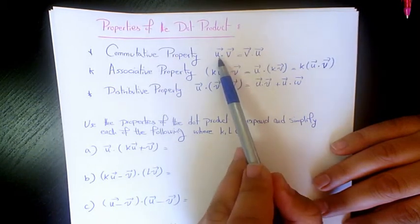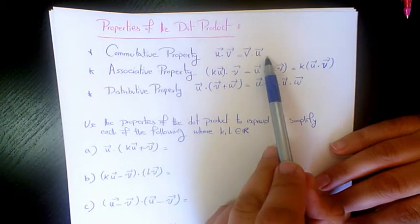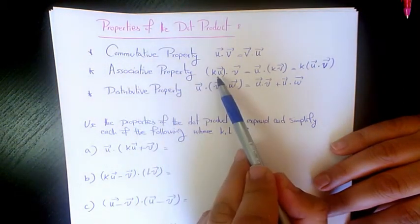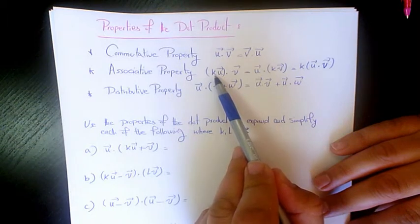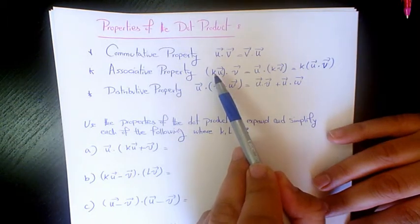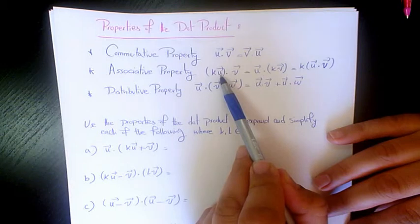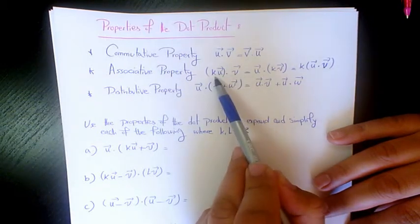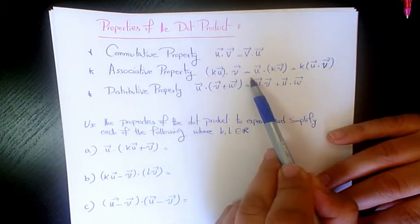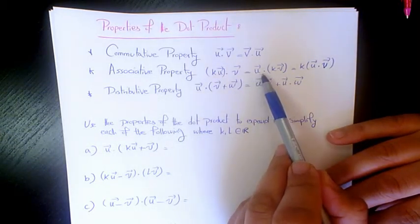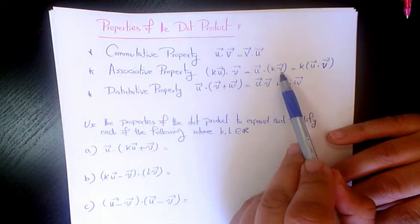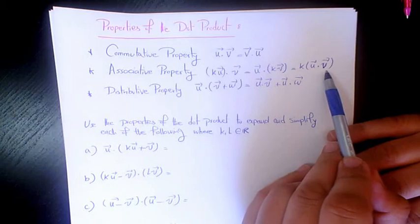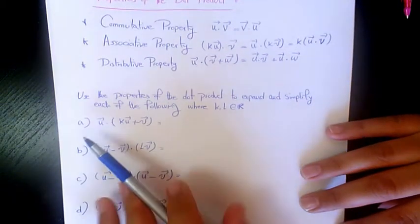So whenever you have u dot v, that would be equal to v dot u. Next is the associative property, which means that when we have k as a real number scalar, times u, which is a vector, dot v, the dot product of k, u, and v equals the dot product of u and kv, and that equals k times the dot product of u and v.